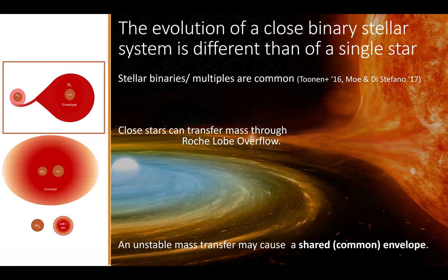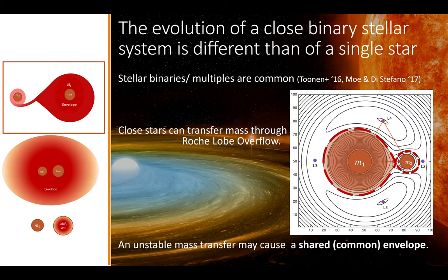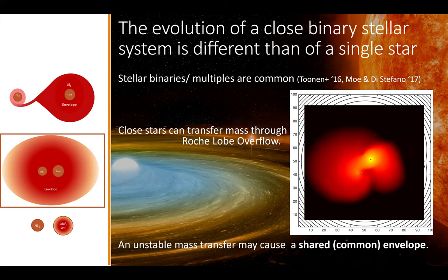Let's talk about the general scenario of the common envelope in a binary system. When a star is part of a binary or multiple system, it evolves differently than if it was evolving alone. When two stars are close enough, they can transfer mass from one to the other by Roche lobe overflow. If this process is not stable, then both Roche lobes can be filled up and the shared envelope — the common envelope — is formed.